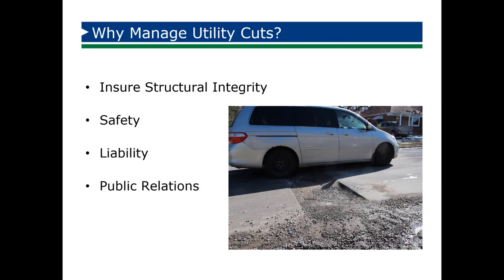When you start thinking about a utility cut program — really putting together a formal program for your community — you have to start off with the big question: why are you doing this? This picture probably says a thousand words to all of us if you've ever run across an unimproved utility cut like this. This vehicle looks like it may have run over this a couple times; it's missing its hubcaps already on both tires. But why do we do that? It's really for these four reasons. We're doing it to ensure that the asset we have — our investment in the road — that we're maintaining the structural integrity of that asset.